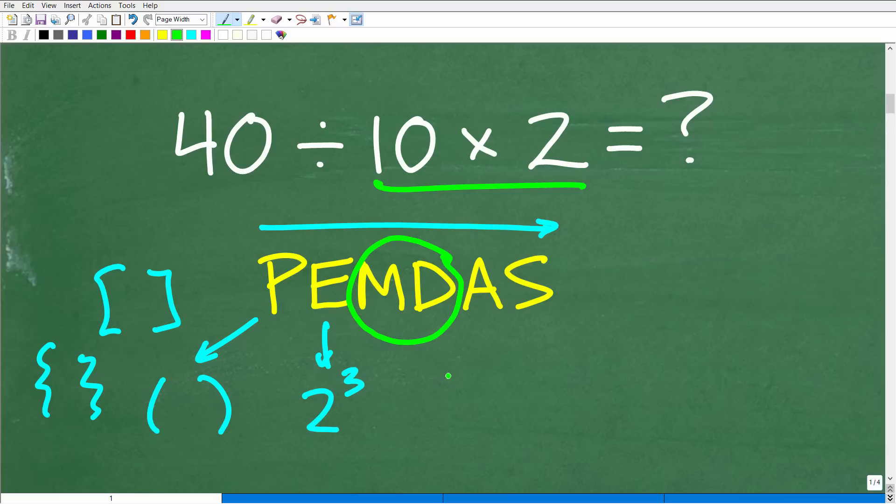Okay. Multiplication or division. Whatever we see first from left to right. So if we see multiplication, then division like this, where we have multiplication first from left to right, we would do it in this order. Multiplication, then division.